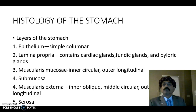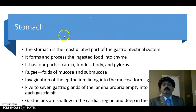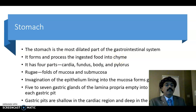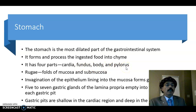We have reviewed the layers of the stomach. The stomach is the most dilated part of the gastrointestinal system. It forms and processes ingested food into chyme — chyme is the partially digested food mixed with hydrochloric acid. The stomach has four parts: cardia, fundus, body, and pylorus. By the pylorus it connects to the duodenum, and by the cardia it is connected to the esophagus. The upper part of the body is the fundus.